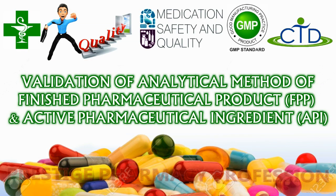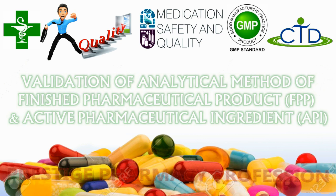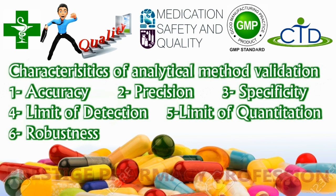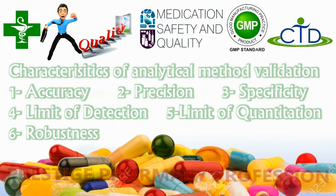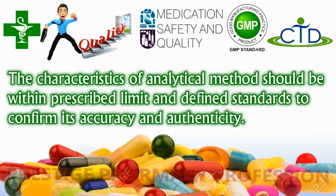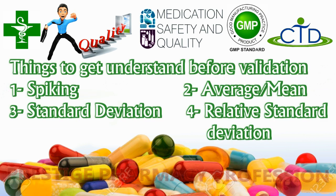Validation of analytical methods for finished pharmaceutical products and active pharmaceutical ingredients is the focus of this discussion. An analytical method is considered validated if it is evaluated through characteristics such as accuracy, precision, specificity, limit of detection, limit of quantification, and robustness. These characteristics must be within prescribed limits and defined standards to confirm the method's accuracy and authenticity. Validation is highly dependent on the understanding of statistical terms and the concept of spiking.